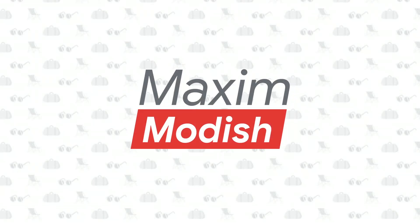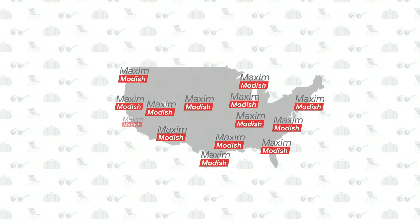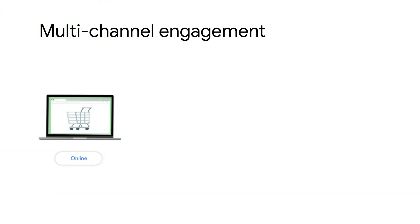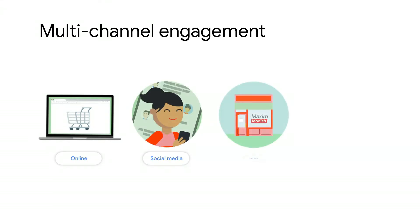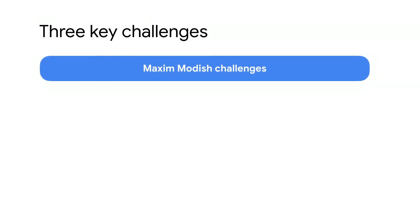For a company like Maxim Modish, a fictional retailer, in-person shopping has been the backbone of their retail model for years. As a premier retailer, they have hundreds of department stores across the nation. But to meet increasing online demands, they've had to undergo a digital transformation. In recent years, Maxim Modish customers have been engaging with them through multiple channels — online, through social media, in-store, and in-app. Naturally, these customers expect a seamless experience across all of these channels.